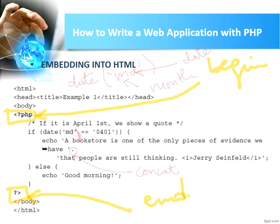The tag 'i' means italic — this part will be displayed in italic font. Then we have else echo 'Good morning'.